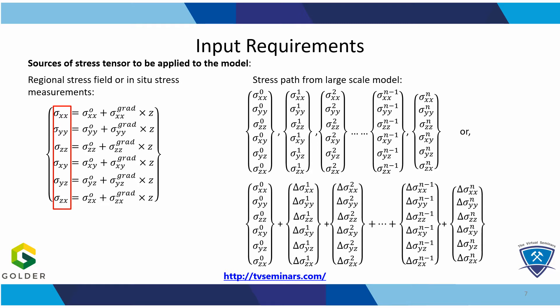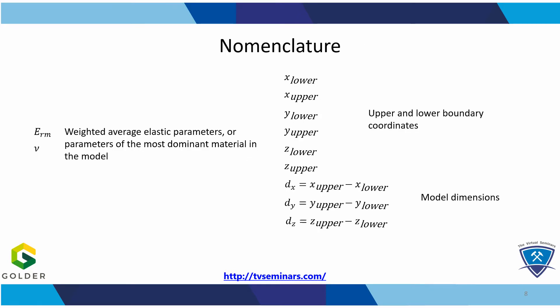If you're looking at an initial stress tensor, you can use a gravitational stress tensor or any other tensor that you have for the original stresses. If you're looking at a stress path, then you're going to need a series of stress tensors — whether you capture the full stress tensor at each stage or the first stress tensor and increments to that stage, it doesn't matter, but you're going to need the full stress path. We're going to need the elastic properties of the rock mass and the dimensions or coordinates of the model so you can define the lengths in the x, y, and z direction. We're going to start dealing with stress tensors and strains, so you're going to see a little bit of algebra in the next few slides.